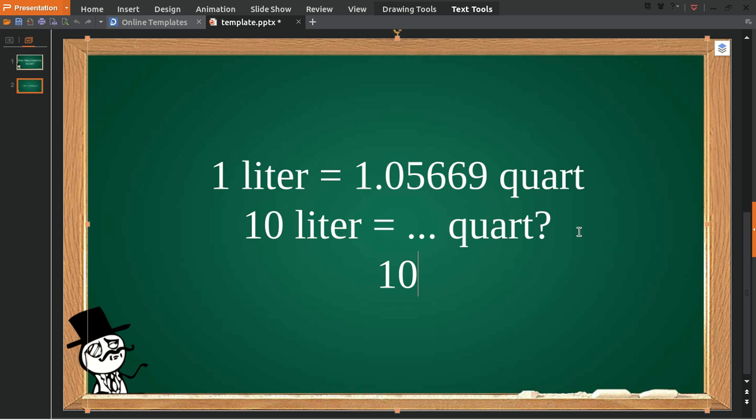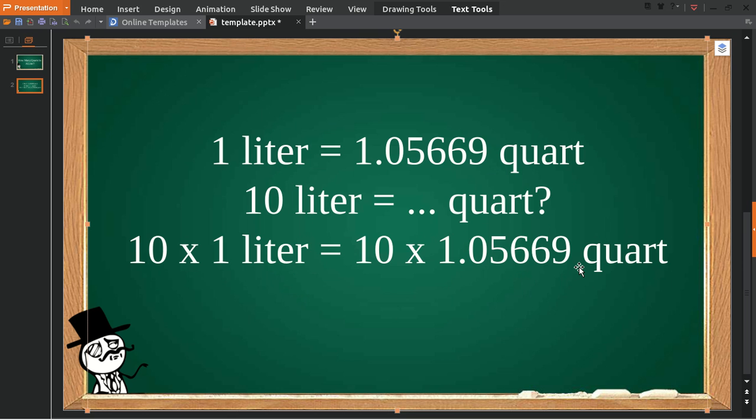The first step you need to multiply 10 with 1 liter and give it an equal sign, and multiply 10 again with this number. So 10 liters is equal to 10.5669 quart.